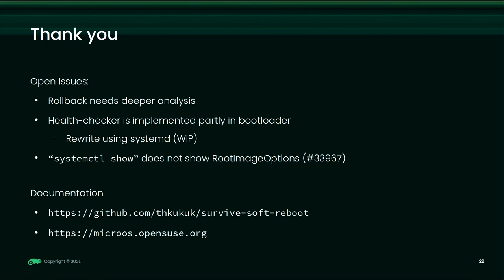Open issues: with soft reboot in general we need to look more deeply at rollback — when we can do a rollback with soft reboot and when we need a hard reboot. The health checker tool, which checks if the system comes up correctly after an update, is also not working correctly because it's partly implemented in the bootloader. The GitHub repo contains the ButterFS generator and all the examples for different images — portable images, service files, and so on — if you want to try it yourself.